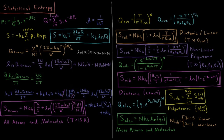This equation is called the Sackur-Tetrode equation. It is true for all atoms and molecules and is an extremely accurate approximation for the translational entropy of an ideal gas for temperatures above about 15 Kelvin. Translational entropy is the dominant contribution to the entropy of ideal gas particles because there are an enormous number of translational states with non-zero probability at room temperatures around 300 Kelvin.